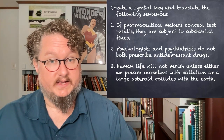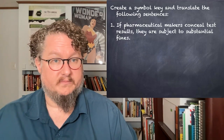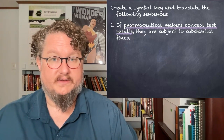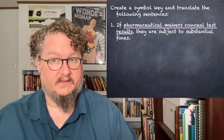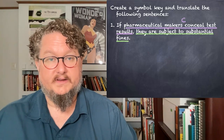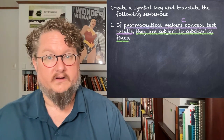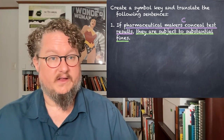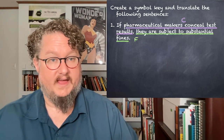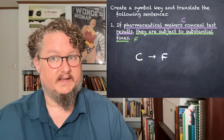Let's see how you did. Let's start with number one — how we're going to create our symbolization key. We've got a simple sentence: 'pharmaceutical makers conceal test results.' Let's use C to represent that. And then 'they are subject to substantial fines' — we cash out our pronoun and say 'pharmaceutical makers are subject to substantial fines.' We'll use F to represent that atomic sentence. And then we've got a simple if-then: if C then F.